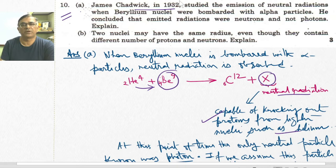At this point in time, the only neutral particle known was the photon. If we consider this to be a photon and apply conservation of energy and momentum, then it turns out the energy of this neutral radiation should be very high, which was contrary to the experimental value of energy obtained.